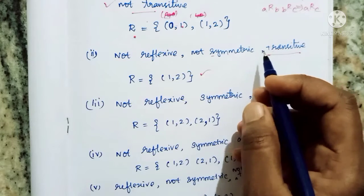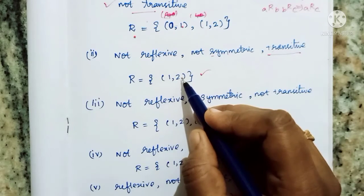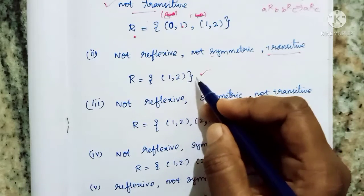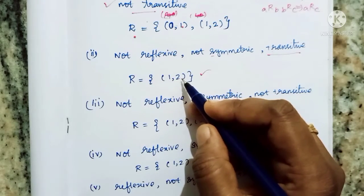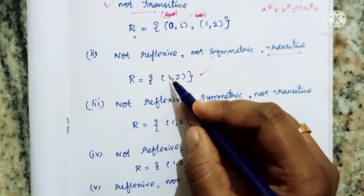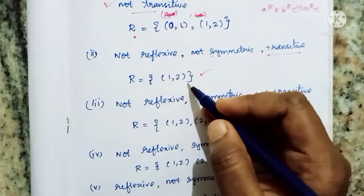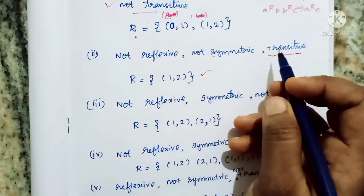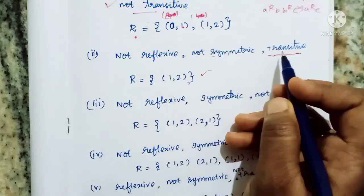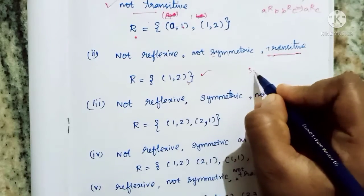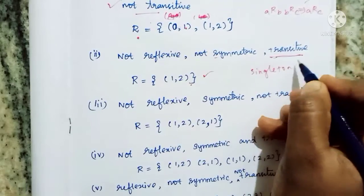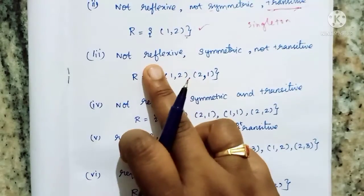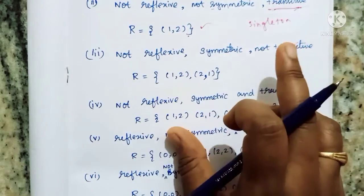As taught in the book: if we have (1,2) and (2,3), we are not transitive unless (1,3) is also present. If we have (1,2) or (0,1) without the required third pair, we are not transitive.